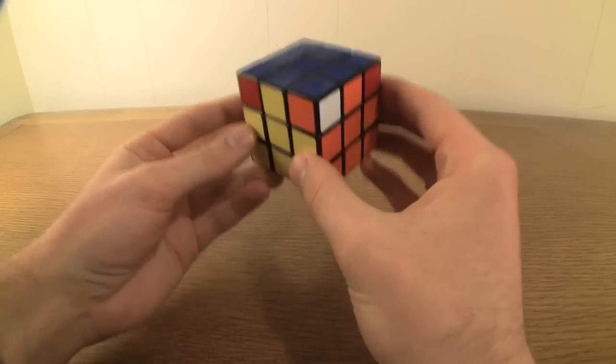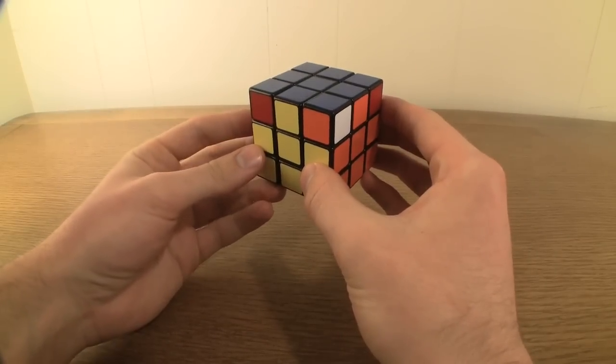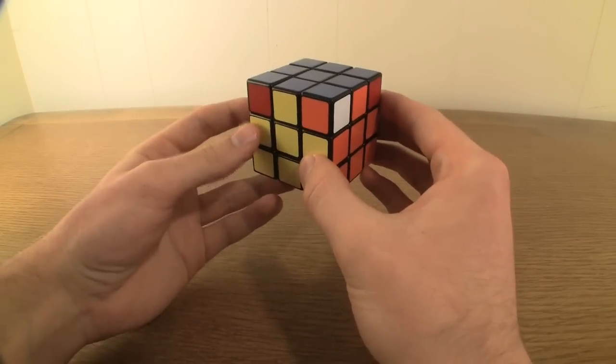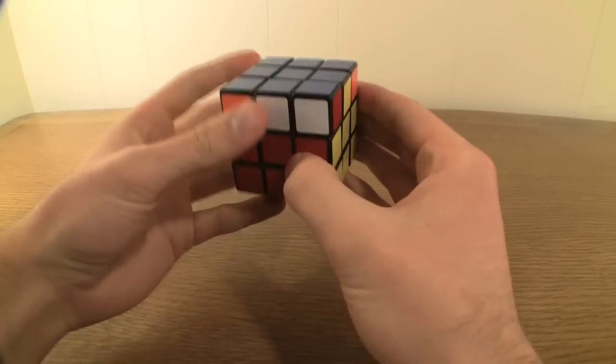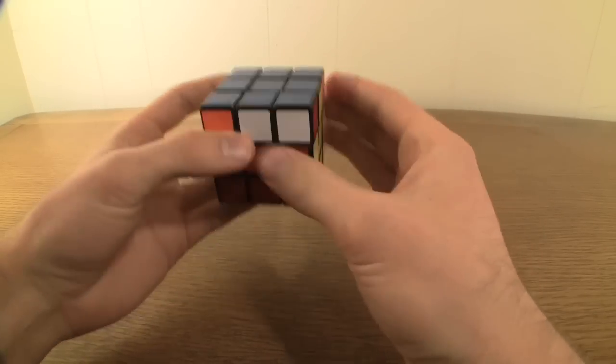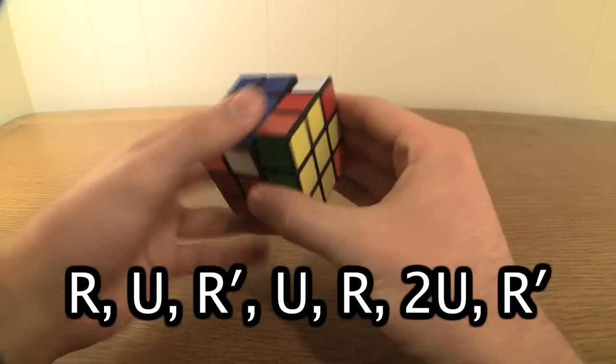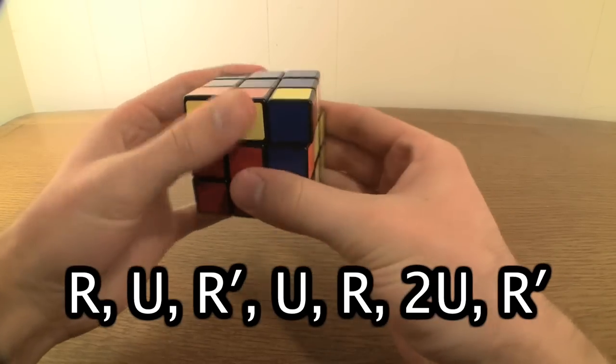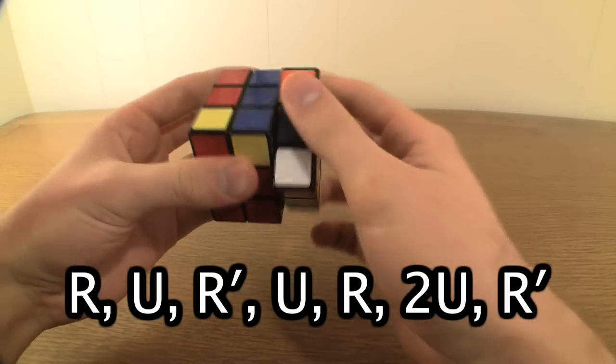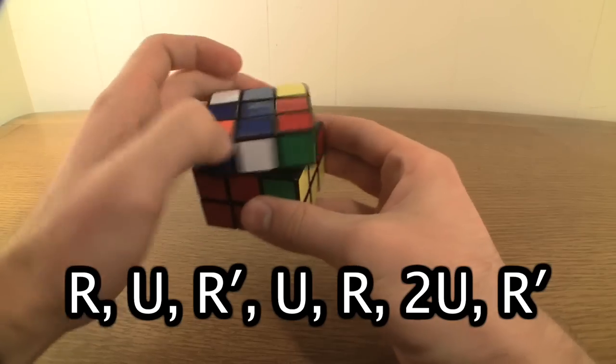Hold the cube so that one of the lined up edge pieces is in the top middle of the right side, and the other is in the top middle of the side across from you, and perform the algorithm R, U, R', U, R, 2U, R'.